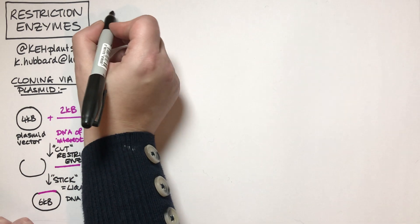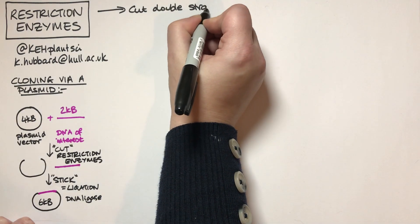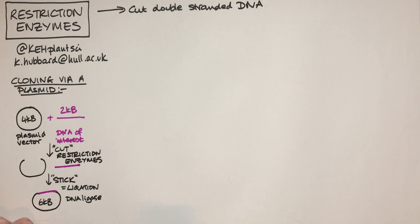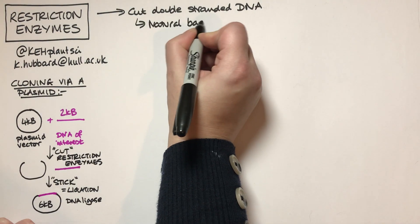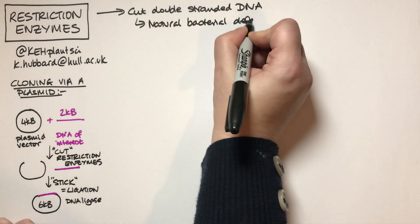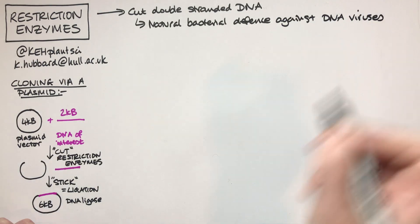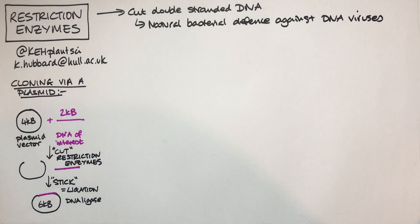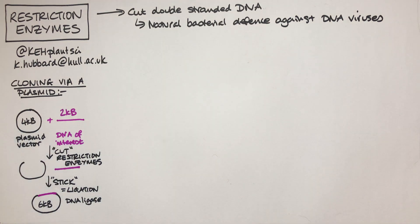Restriction enzymes are enzymes that cut double-stranded DNA, and these are naturally occurring enzymes. They're a natural bacterial defense against DNA viruses — bacteria have quite a few different DNA-based viruses that want to come in and harm the cell, so bacteria have learned through evolutionary time to be able to cut up viral DNA to protect themselves. All of these enzymes are extracted from various different types of bacteria.